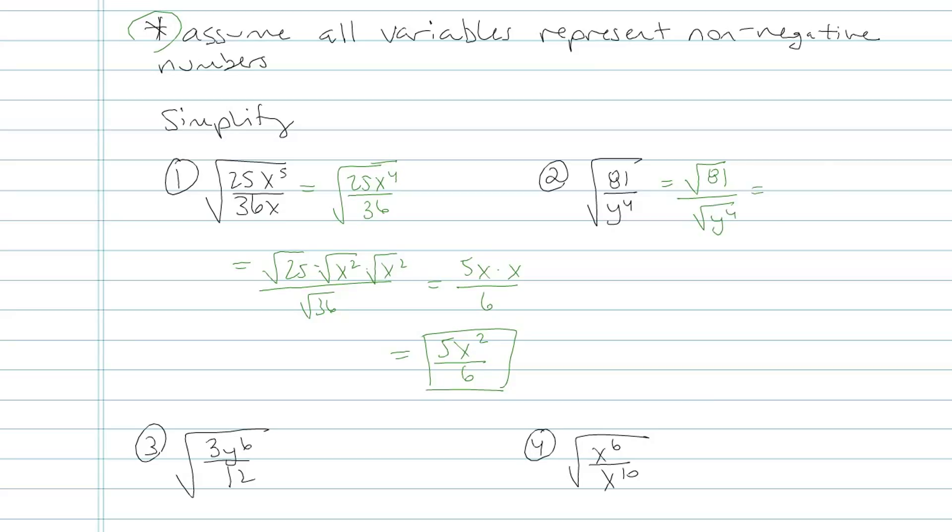Then square root of 81, I know that's just plain old 9, so I'm going to go ahead and simplify that. y to the fourth is the same thing as square root of y squared times square root of y squared, which is y times y. So my final result would be 9 over y squared.